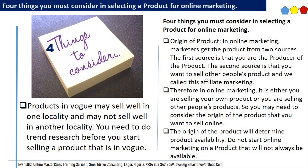4 things you must consider in selecting a product for online marketing. Thing 1: Origin of product. In online marketing, marketers get the product from two sources. The first source is that you are the producer of the product. The second source is that you want to sell other people's products — we call this affiliate marketing. The origin of the product will determine product availability. Do not start online marketing on a product that will not always be available. You may have the demand but product availability can become an issue.